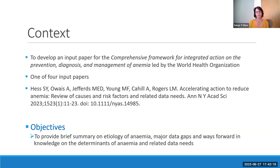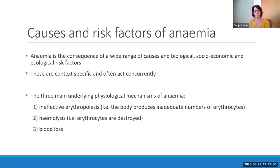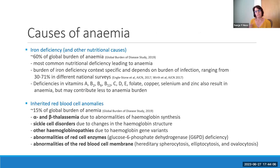The objective of both the paper and the presentation today is to provide a brief summary on the etiology of anemia, major data gaps, and ways forward in knowledge on the determinants of anemia and related data needs. Anemia is a consequence of a wide range of causes and biological, socioeconomic, and ecological risk factors, which are very context-specific and often act concurrently. There are three main underlying physiological mechanisms: ineffective erythropoiesis, where the body doesn't produce adequate erythrocytes; hemolysis, where erythrocytes are destroyed; and blood loss. The various causes can lead to various combinations of these mechanisms.